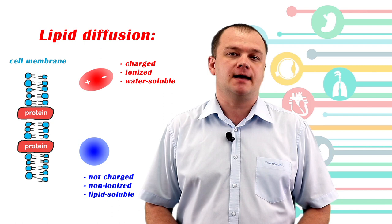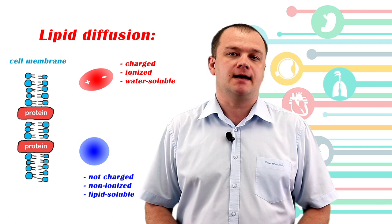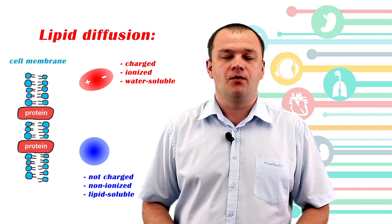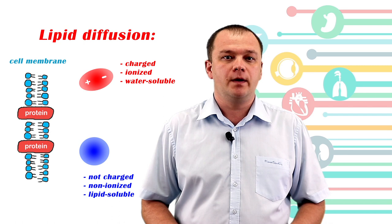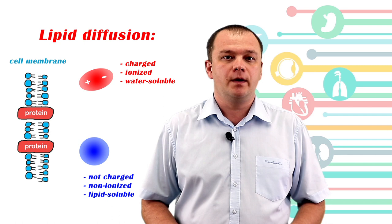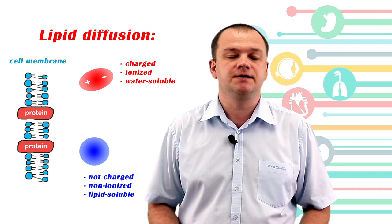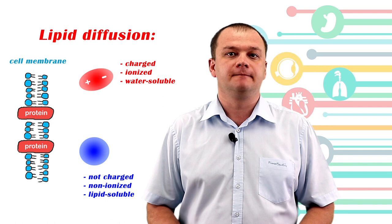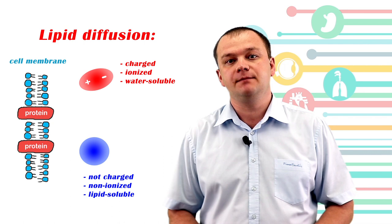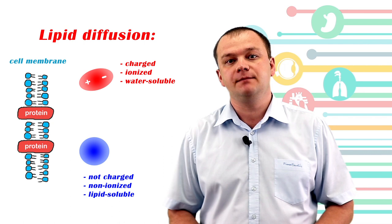Most drugs are weak acids or weak bases. For example, weak acids include aspirin, thiazide, and loop diuretics, and morphine or local anesthetics are weak bases. When present in fluids of living organisms, weak acids dissociate and weak bases accept a proton. So they become ionized or non-ionized — charged or not charged — because these drug molecules contain chemical groups that can be ionized.